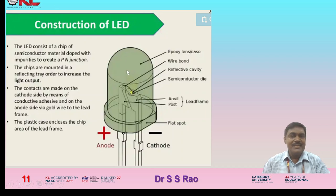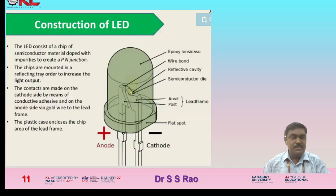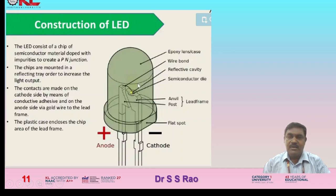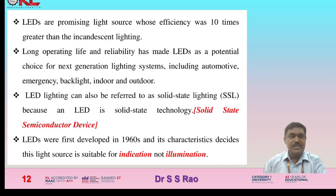For LED construction: the LED consists of a chip of semiconductor material doped with impurities to create a PN junction, and the chip is mounted in a reflecting tray to increase light output. Contacts are made on the cathode side via conductive adhesive and on the anode side via a gold wire to the lead frame. The plastic case encloses the chip area of the lead frame. The anode acts as positive and the cathode as negative. Key parts visible in the diagram include the bond pad, anvil post, lead, wire bond, and reflective cavity. When power is supplied through anode and cathode, the LED glows and provides illumination.